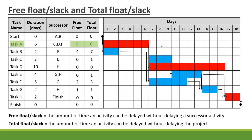Task A is one of our tasks on the critical path, so it doesn't have any free float or total float. Task B, on the other hand, has a free float of 4 days — it can be delayed by 4 days before it will have an impact on Task F. So the free float is 4 days.